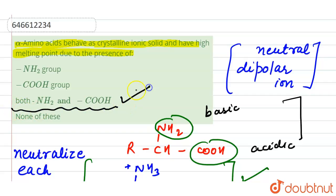This formation takes place at the isoelectric point, where at that pH there is no net migration. So our answer is both NH2 and COOH.